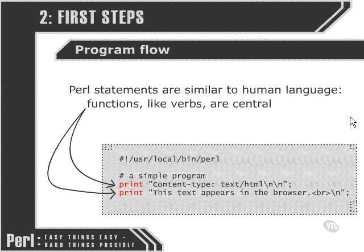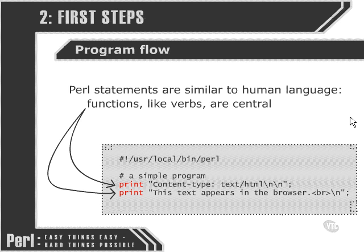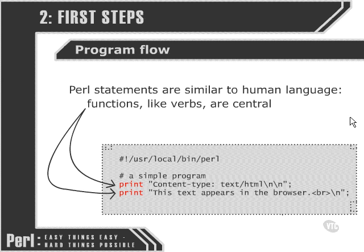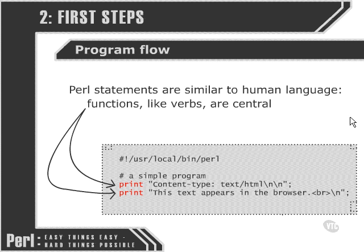There's also a lot of similarity between the structure of lines of Perl code and human language. Functions, such as the print function highlighted in red here, are very similar to the way verbs function in human language. The verb is very central to a sentence and all the other parts fit around it — either the subject doing the verb or an object the verb is done to. Similarly in Perl, the print function is acting like the verb and whatever comes after it is what the function is doing.